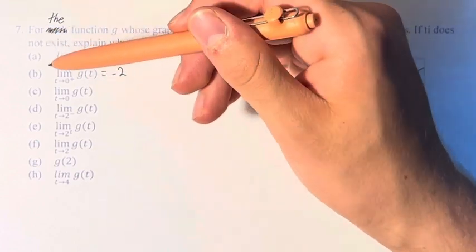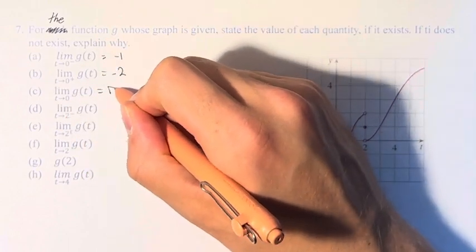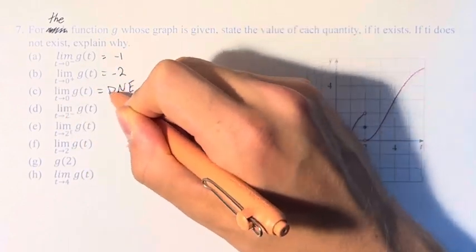And since it does not approach a singular value from the left and the right, the overall limit as t approaches 0 does not exist.